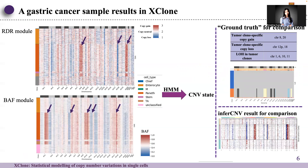We applied XClone on a gastric cancer sample using bulk RNA sequencing and single-cell DNA sequencing calling results as ground truth. Compared with the ground truth, the single-cell RNA-seq copy number variation calling results are quite accurate and comprehensive.